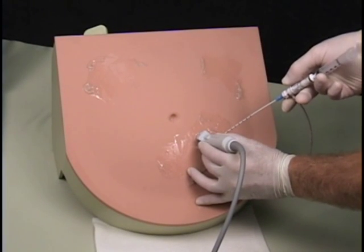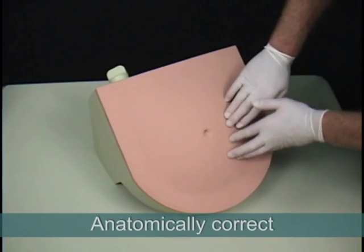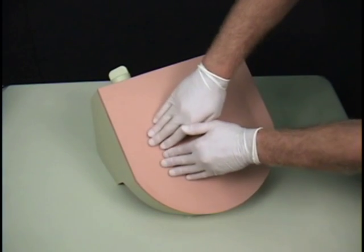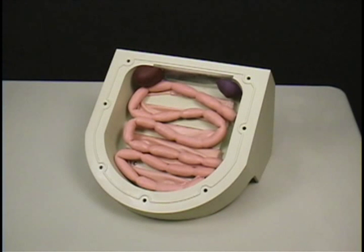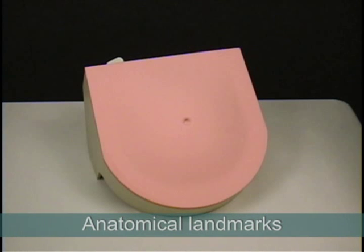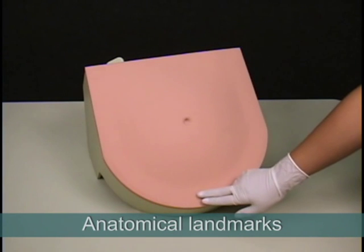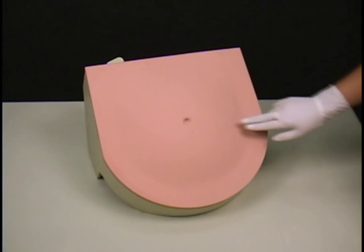The model's anatomy includes superficial epigastric vessels, partial liver and partial spleen, rectus abdominal muscles and mesentery intestines. The anatomical landmarks include the pubic symphysis, iliac crest and umbilicus.